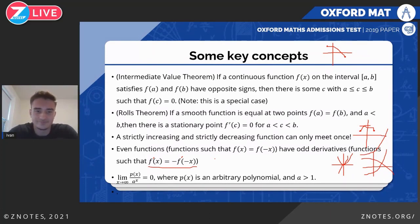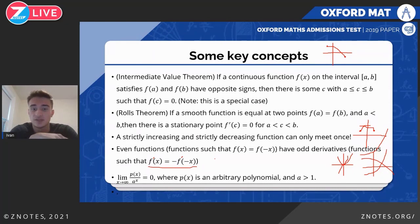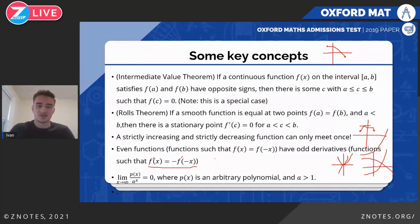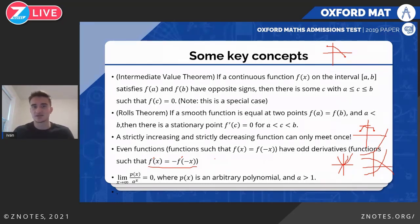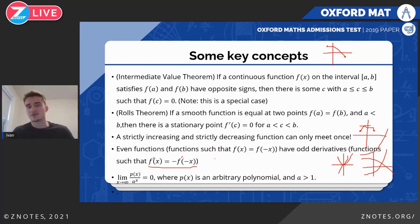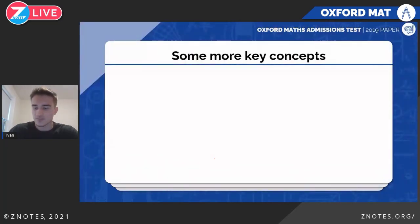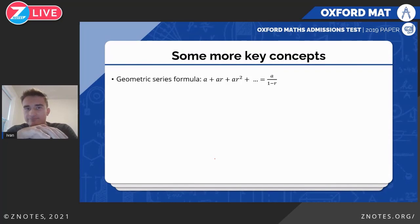Another concept: all polynomials are dominated by an exponential function aˣ where a > 1. So even something like x¹⁰⁰ will eventually be overtaken by 2ˣ — it might not happen immediately, but it eventually does. You can verify this on a calculator.